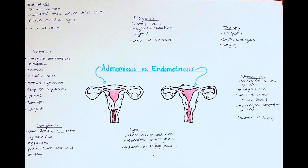In endometriosis there is endometrial tissue outside the uterine cavity, and the exact location can differ and can be divided into different types. The first type is endometriosis genitalis interna, where there is endometrial tissue within the uterus but outside the uterine mucous membrane — this includes the myometrium and the fallopian tubes. Adenomyosis, which we will talk about later, is part of this classification. The next type is endometriosis genitalis externa, where endometrial tissue is found within the genitals but outside the uterus, including the ovaries, the vagina, and the pouch of Douglas.